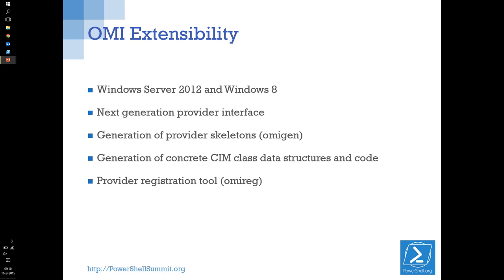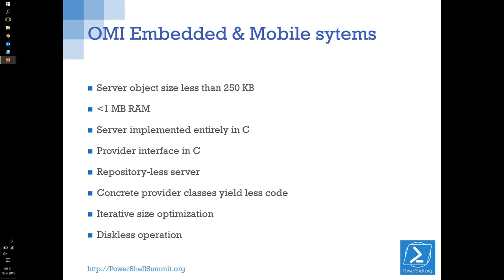That extensibility is the thing for the PowerShell product team — create something where the community can build on top of if they want to. A few statistics I found interesting: the server object is less than 250KB for all embedded and mobile systems. Seriously, I have Word documents that are bigger. Less than one megabyte of RAM is needed — that's awesome. And it's a diskless operation; everything is done in RAM, which makes it freaking fast.